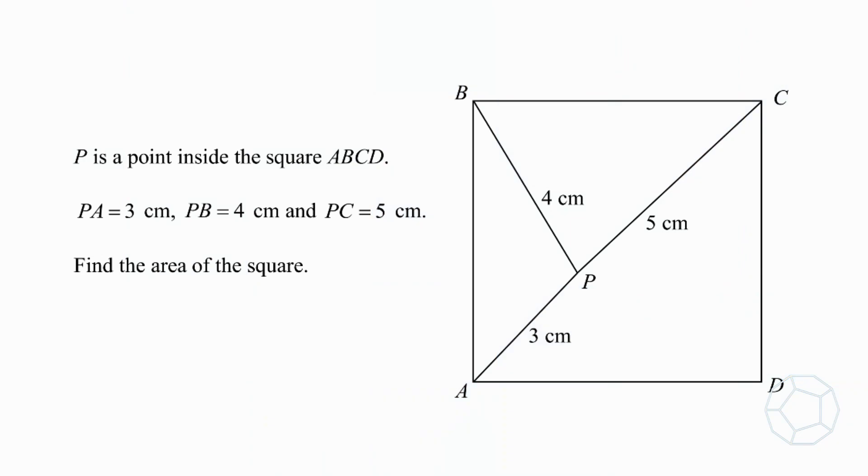P is the point inside the square ABCD. PA is 3cm, PB is 4cm, and PC is 5cm. Find the area of the square. You may use the chapters below to jump to the section of thinking process and different parts of the detailed solutions.